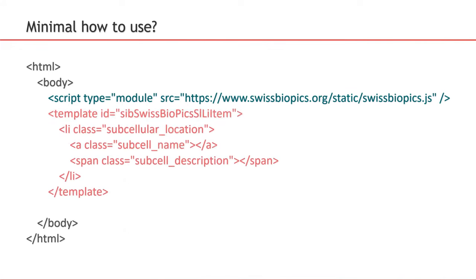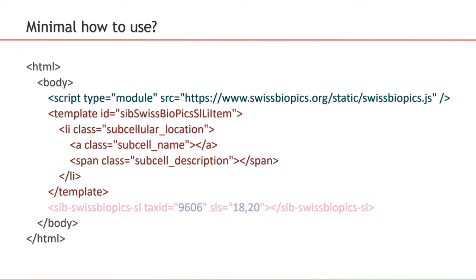Then you add templates to say, hey, I would like the subcellular locations to be rendered like this. And then you just call the SwissBioPix API via the SwissBioPix element to say, for taxonomy ID 9606,